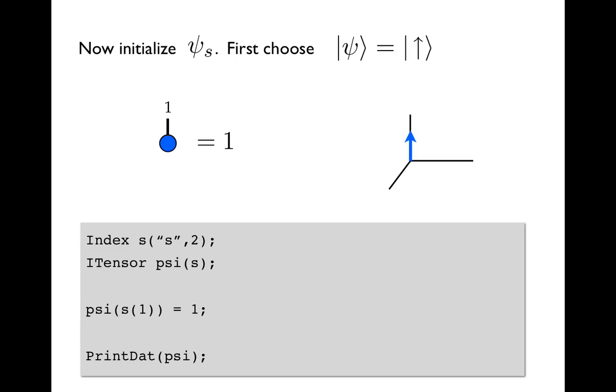So now we can initialize its components to make it into a more interesting tensor. So the way to do this is, again, we show the code declaring the index and declaring our itensor, and then we plug the tensor, sorry, we plug the index into the itensor.